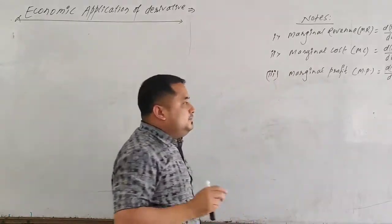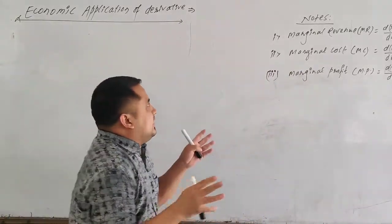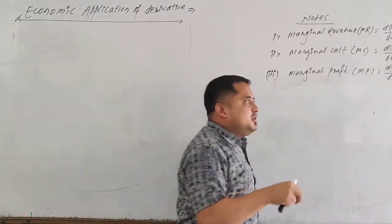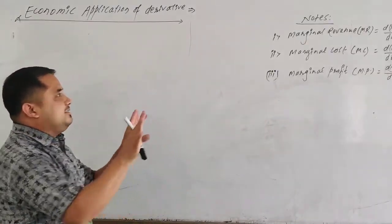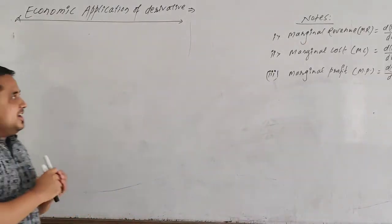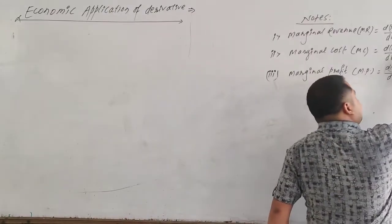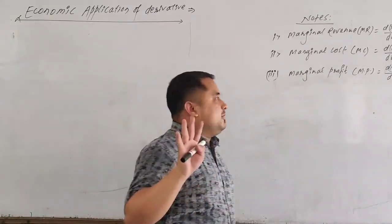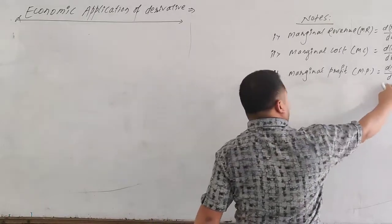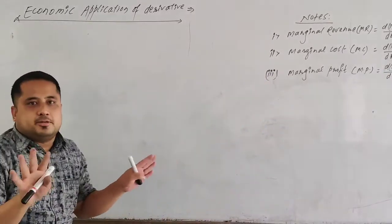We will see three concepts. First, marginal revenue is the derivative of the total revenue function with respect to output per unit. Second, marginal cost is the derivative of the total cost function per unit of output. Third, marginal profit is the derivative of the profit function per unit of output.